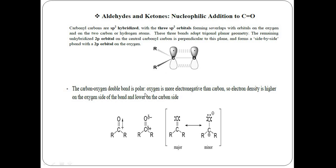The carbon-oxygen double bond is polar in nature. This bond is shared with the electrons of the carbon atom and the oxygen atom. Since oxygen is more electronegative than carbon, electron density is higher with respect to the oxygen atom as compared to the carbon atom. The cloud of electrons is towards the oxygen side more than towards the carbon atom.